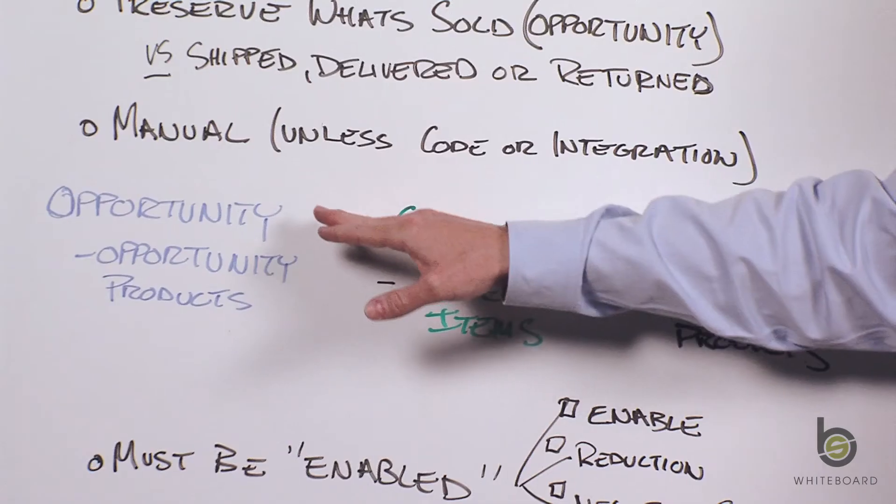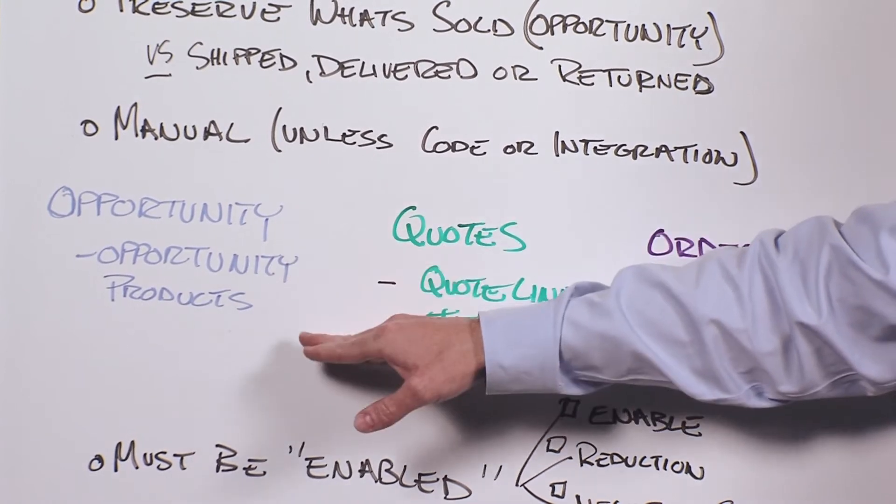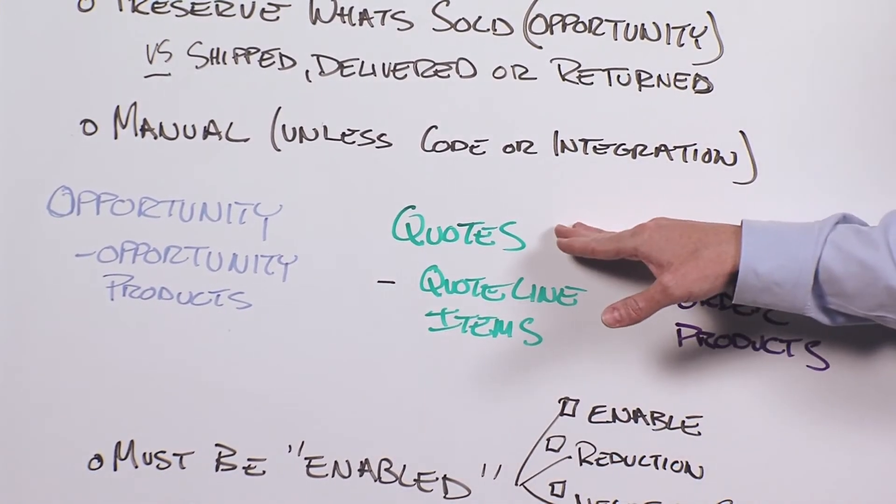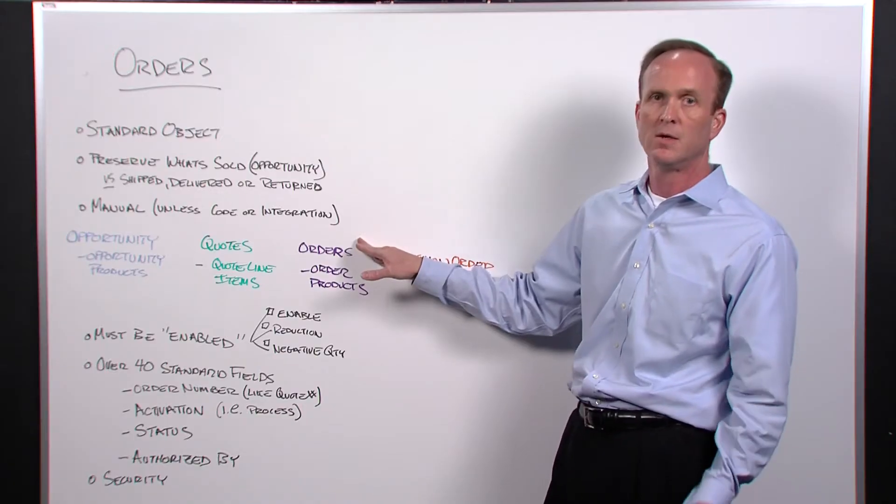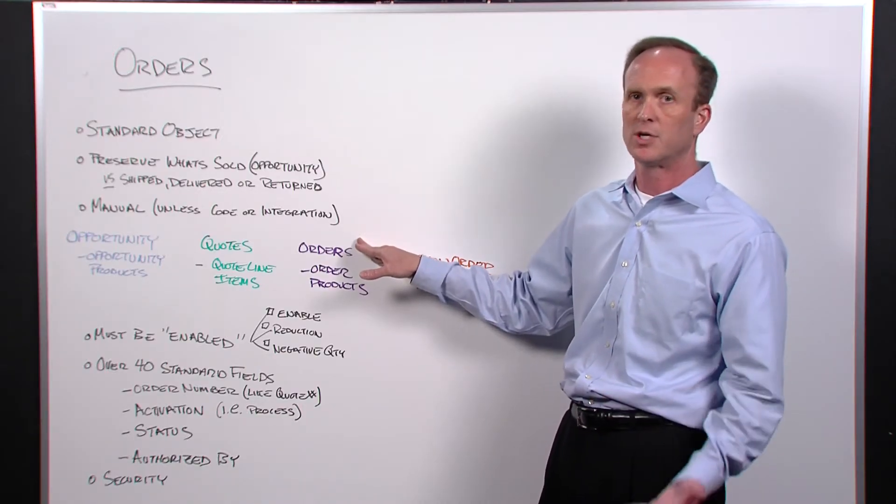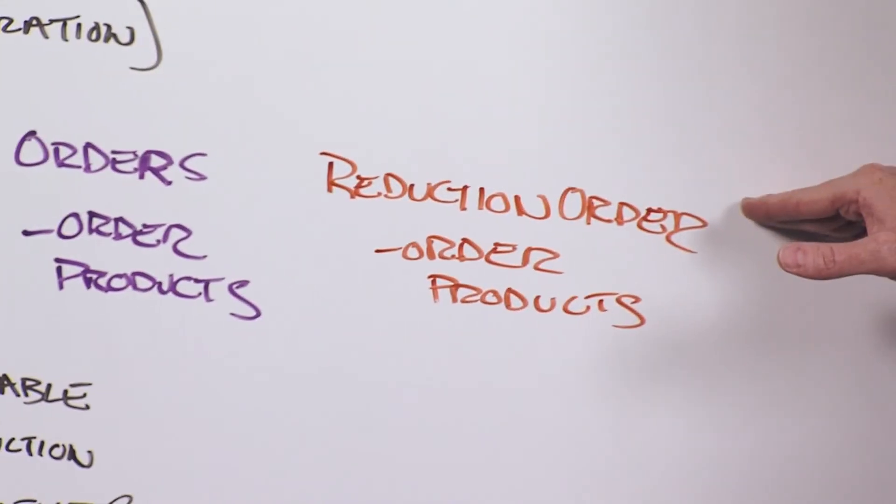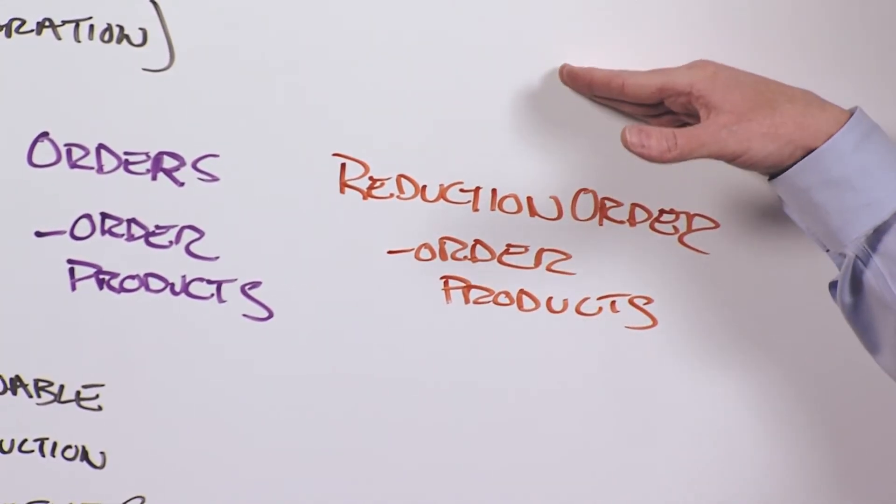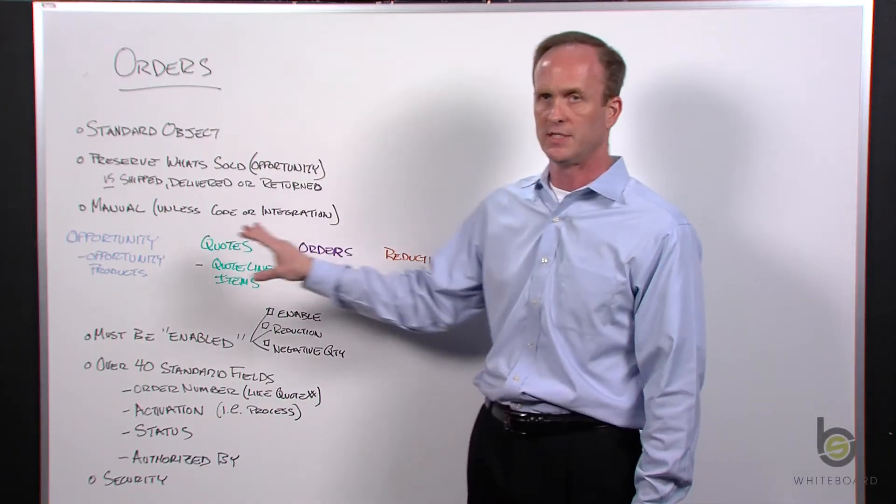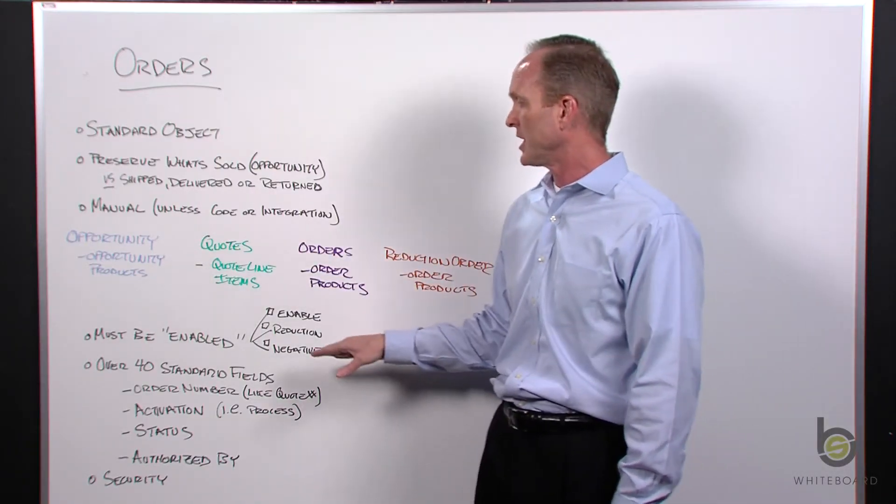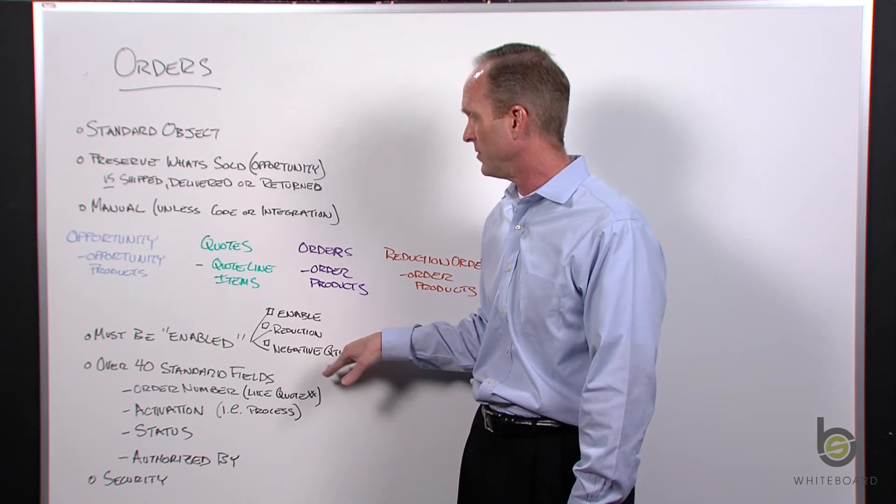So the concepts - you have an opportunity with a header and product line items. Quotes has a header and product line items. Order, same thing: when is it shipped, tracking numbers, product line items. If you have a reduction order, you have a header and the order products. All very similar process-wise, which kind of gets into a couple of things that you need to know.